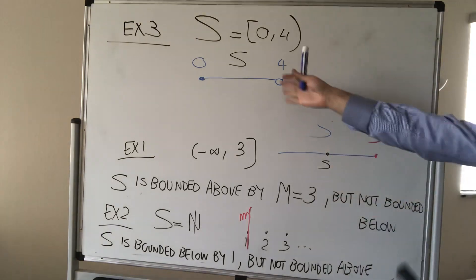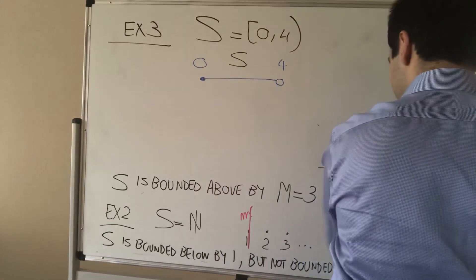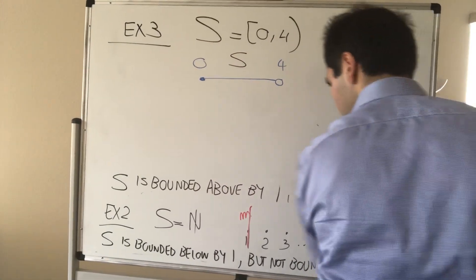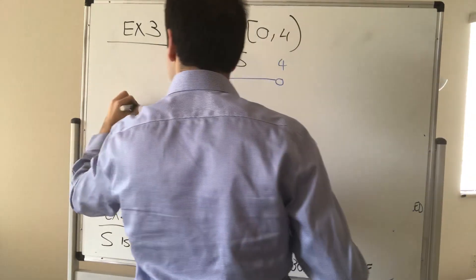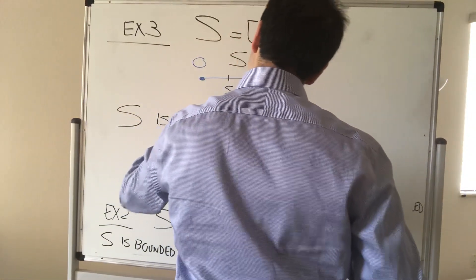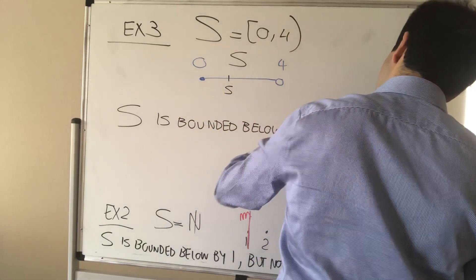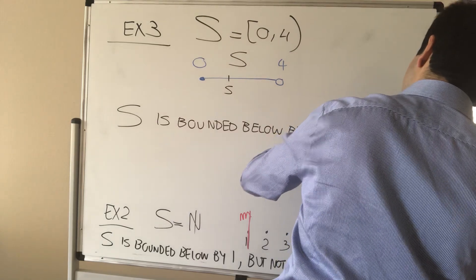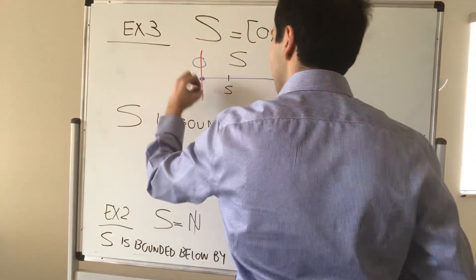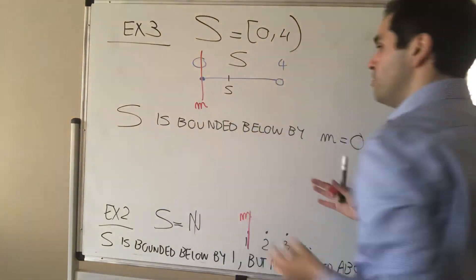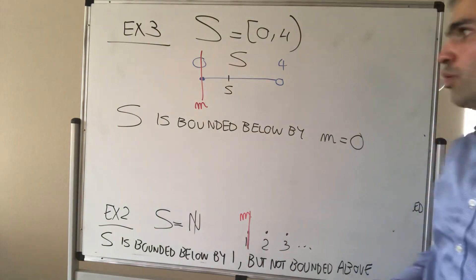Let's see. Then, of course, S is bounded below by zero. So S is bounded below by M equals zero. Again, because if you take any element in your set, if you take any element S in S, then S is guaranteed to be greater or equal to zero.